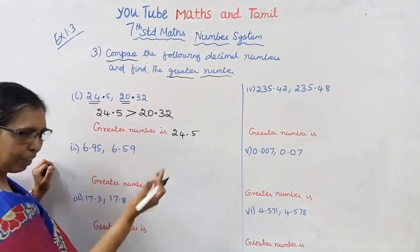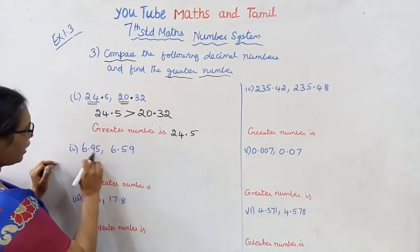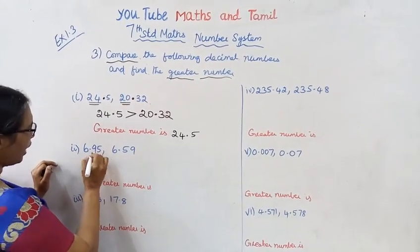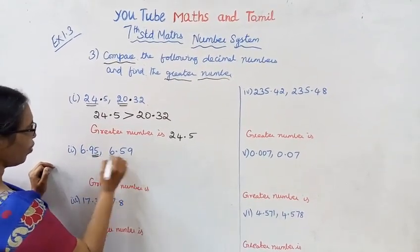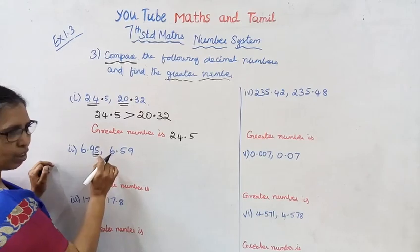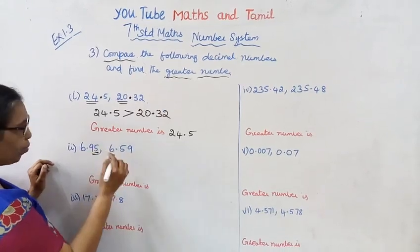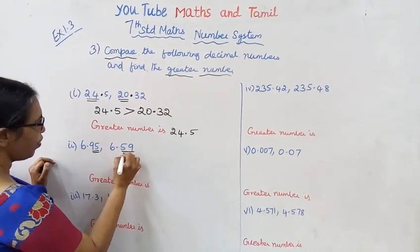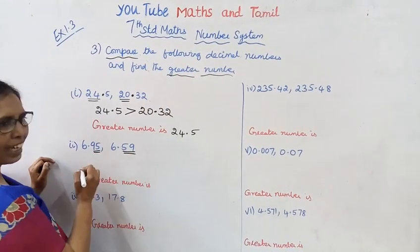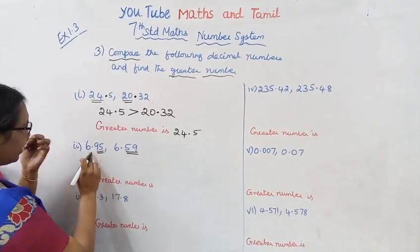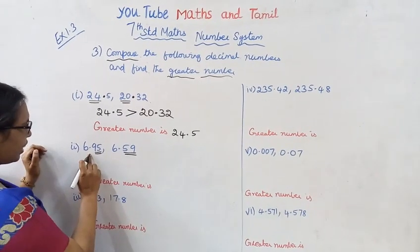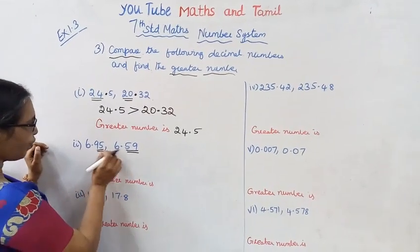Since both numbers are equal before the decimal point, look at the digits after the decimal point. We have 95 and 59. Comparing them: 95 is greater than 59.